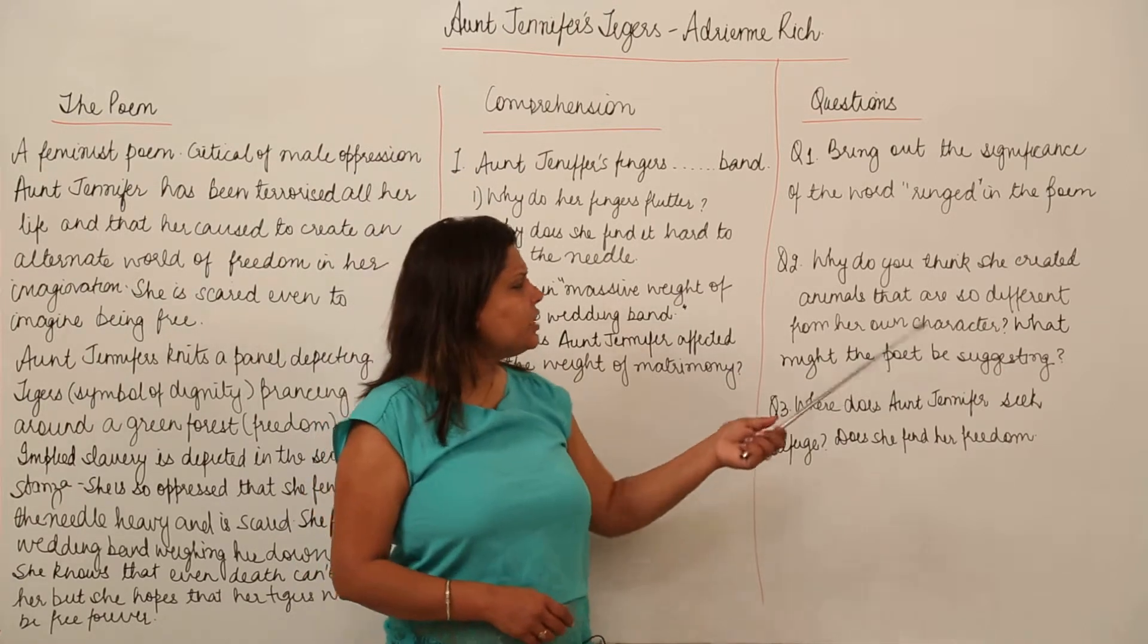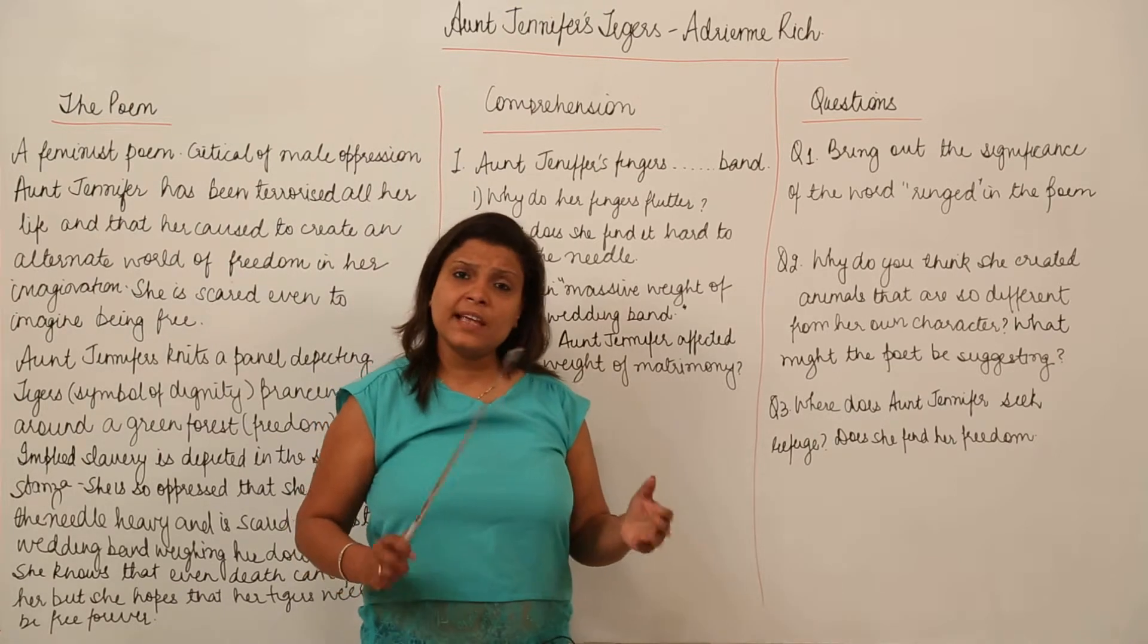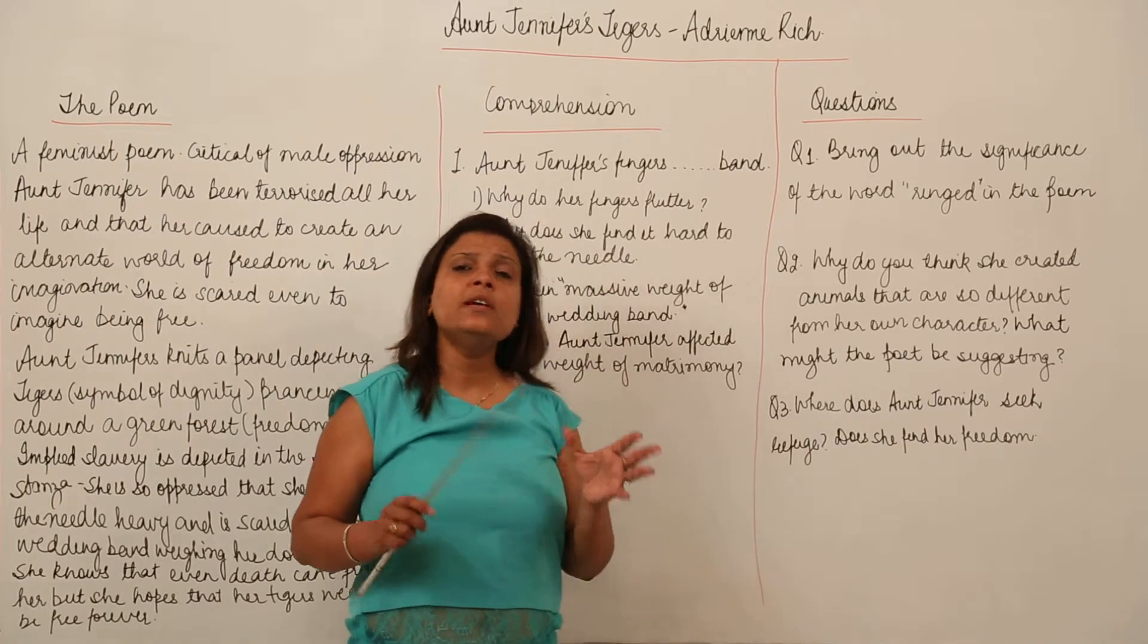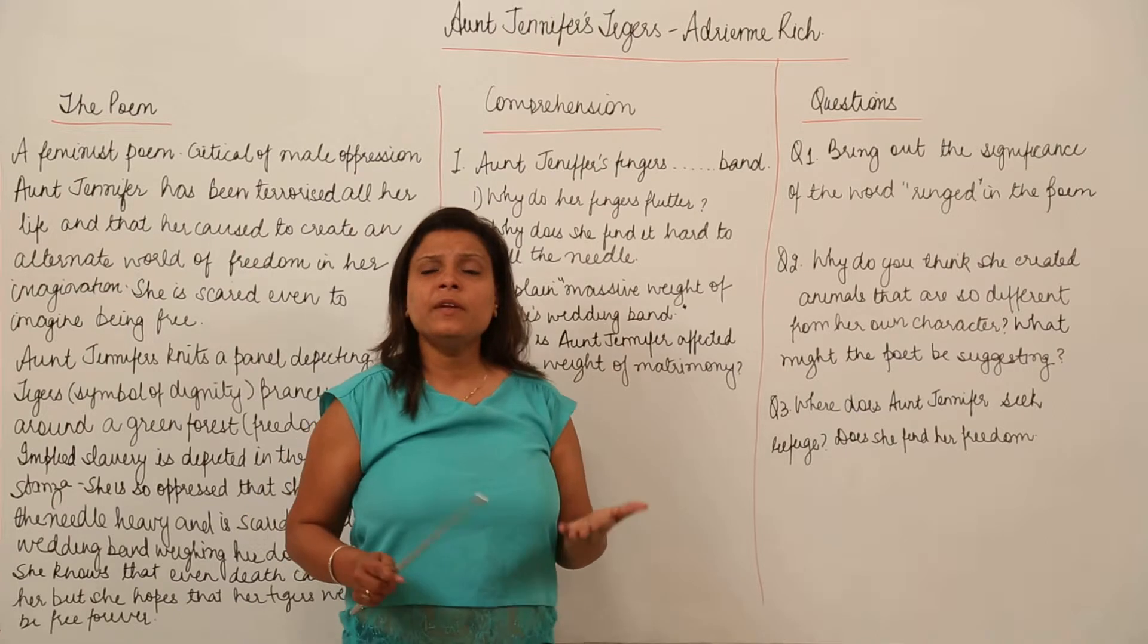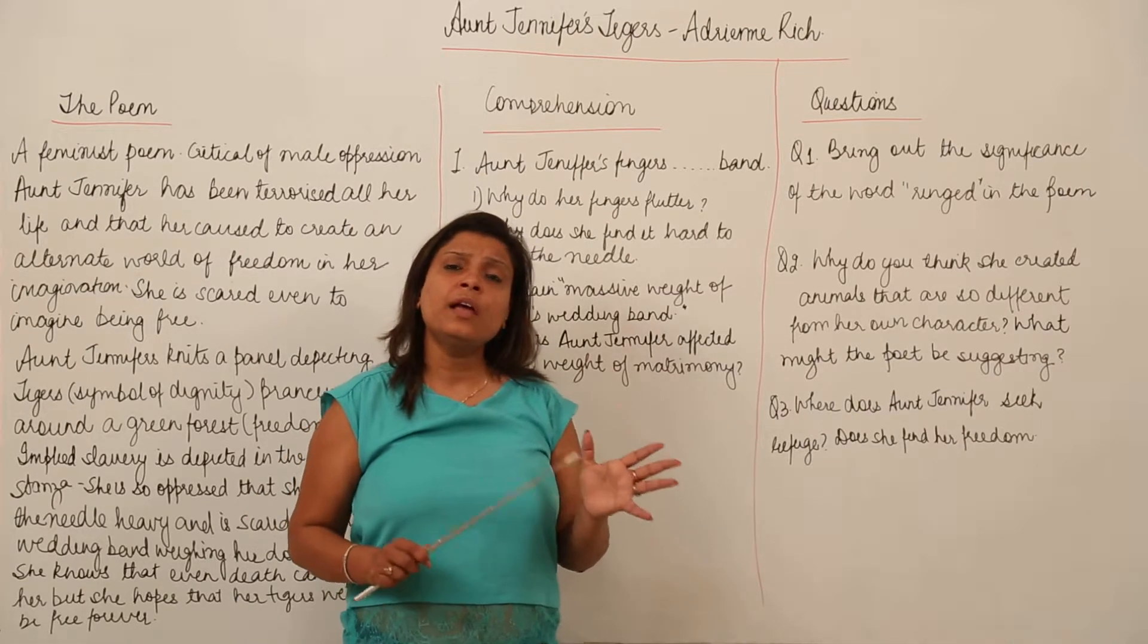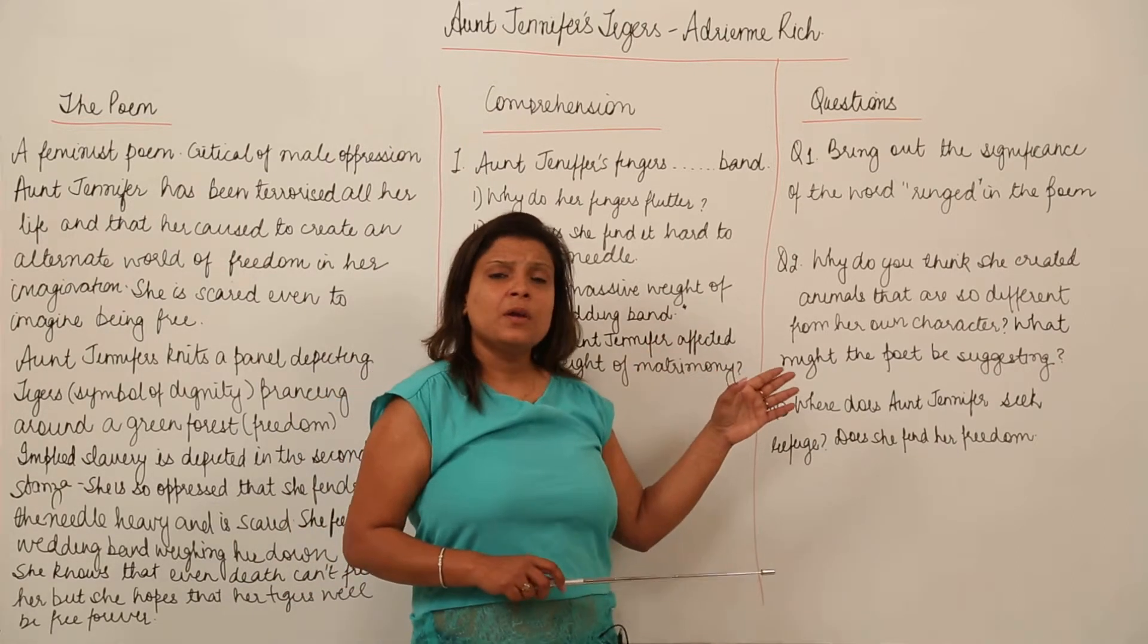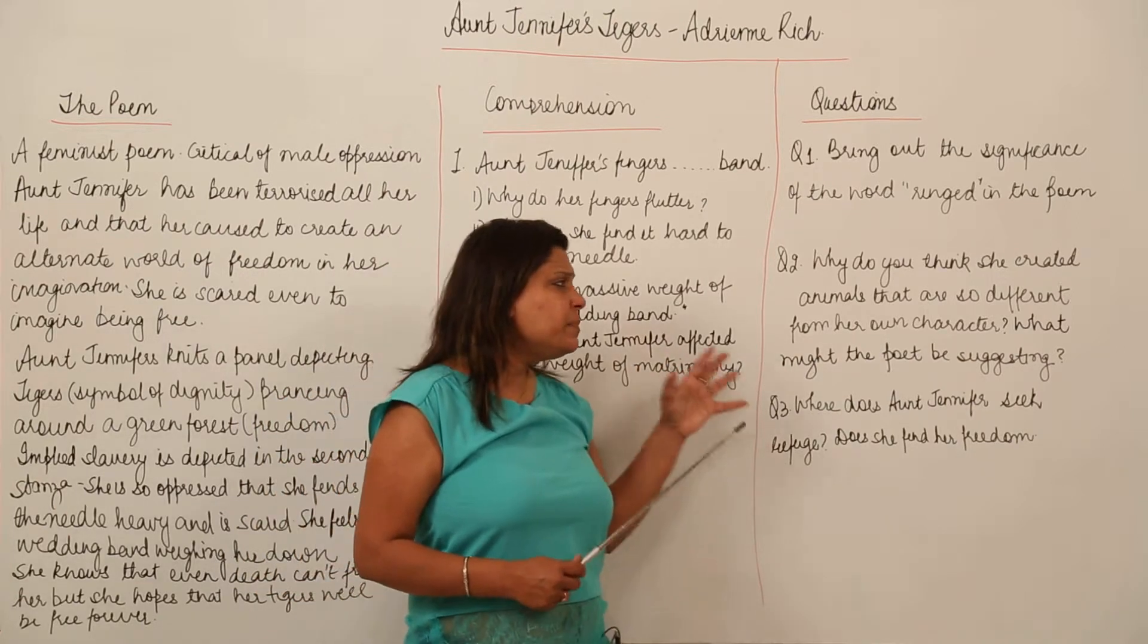Now why do you think she created animals that are so different from her own character? You have to say that she was so oppressed all her life that only in her imagination, only her tapestry was the way to find freedom in her imagination. She wanted an escape route and this was the mechanism to escape the oppression, the slavery that she was undergoing.